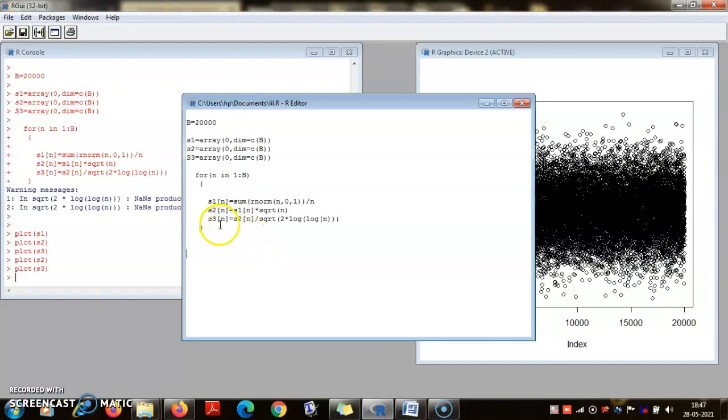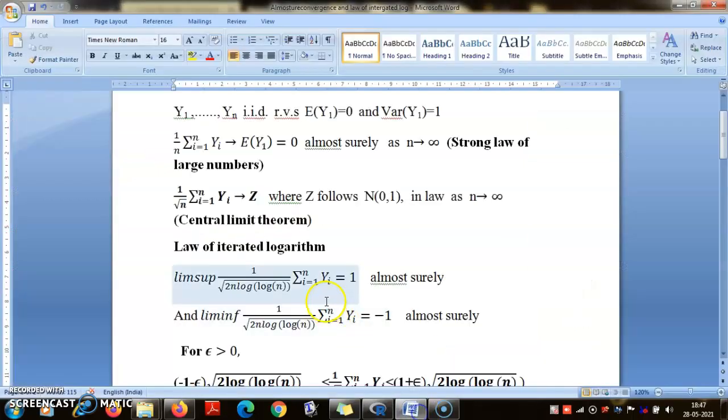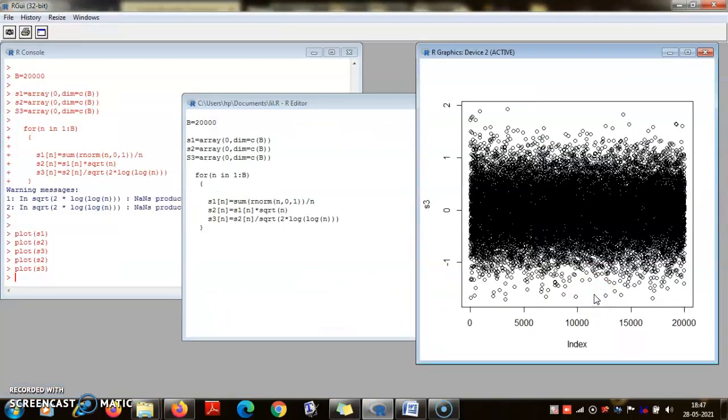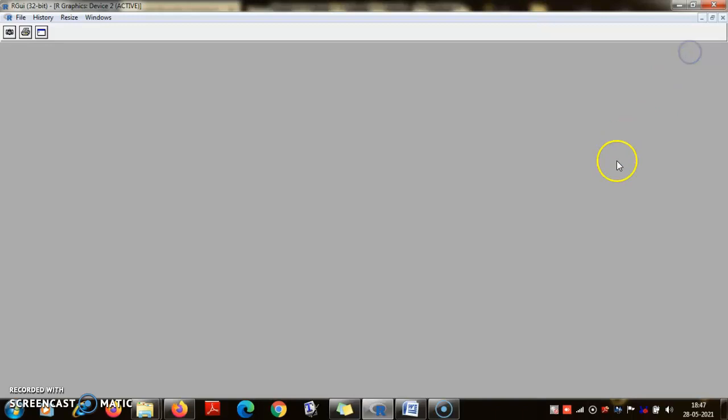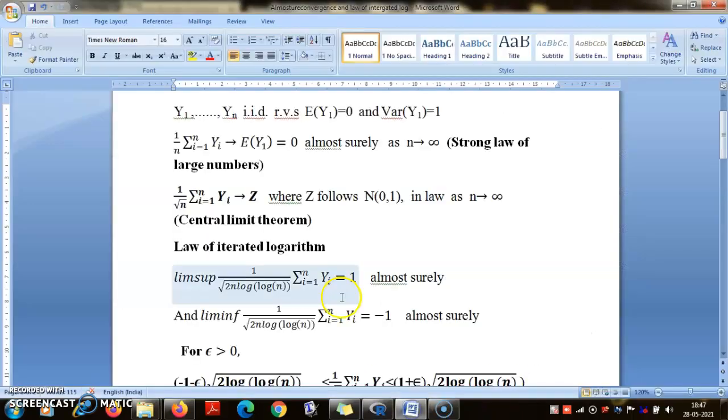So what I have done: I have simulated them here. I have drawn n numbers, each having mean zero variance one. S1 is the mean, S2 is mean times square root of n, and S3 is this ratio—S3 is this ratio (1/√n) Σ Yi divided by √(log log n).